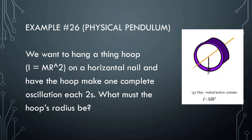Next problem: We want to hang a thin hoop, which has an inertia of MR² through the middle, on a horizontal nail and have the hoop make one complete oscillation each 2 seconds. What must be the hoop's radius? The hoop is nailed at the top and swings back and forth from that point. However, we know the inertia is going to change, so we apply the parallel axis theorem: I = I_cm + Md².